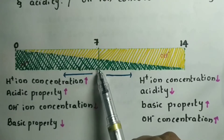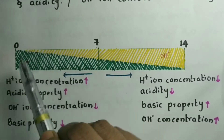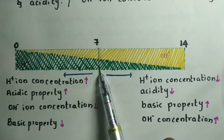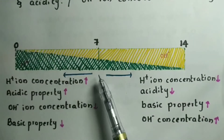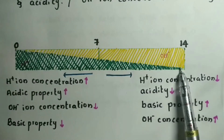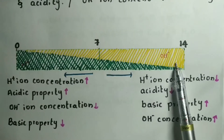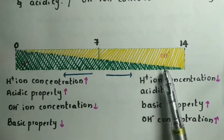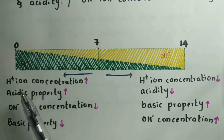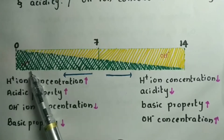When you go from 7 towards 0, the concentration of H+ ions increases — you can see the green area increases. When you move from 7 towards 14, the H+ ion concentration decreases but the OH- ion concentration increases. So as OH- ion concentration increases, the basic property of the solution increases, and as H+ ion concentration increases, the acidic property increases.